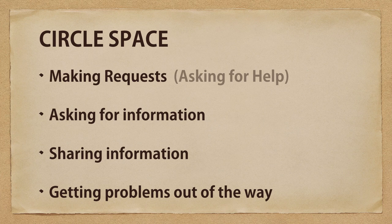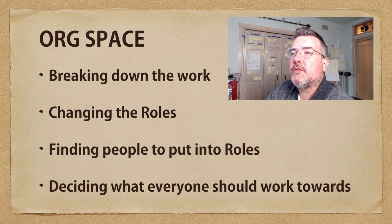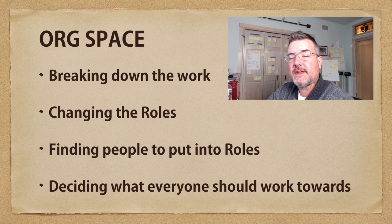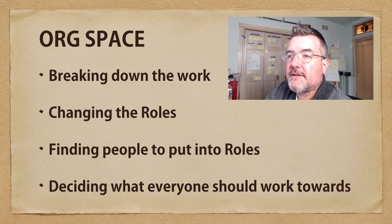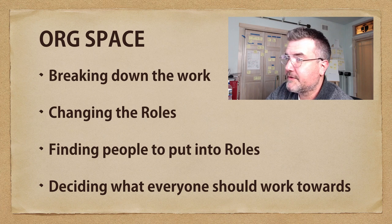In circle space, there's also asking for information, sharing information, and finding ways to get problems out of the way. When we're working in a group, we're usually making requests, asking or sharing information, and talking about how to get problems out of the way so we can move our role work forward. Org space is more about breaking down the overall work of the organization, changing roles because they're dynamic and change over time, and finding people to put into the roles — since roles are not the people and people's roles can change.